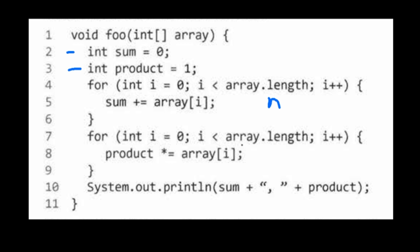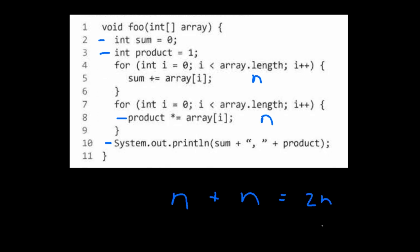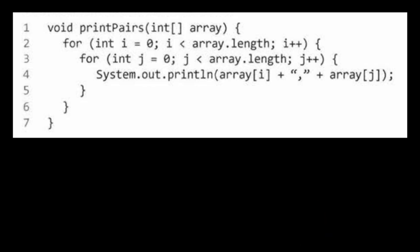We break out of the first for loop and then have another for loop, also going through the length of the array — so that's also n. Printing is constant. So down here we have n plus n, which equals 2n. In Big O notation we always drop constants, because when you scale to a really big number the 2 doesn't make a difference. So we just have n, and this entire algorithm runs in O(n).